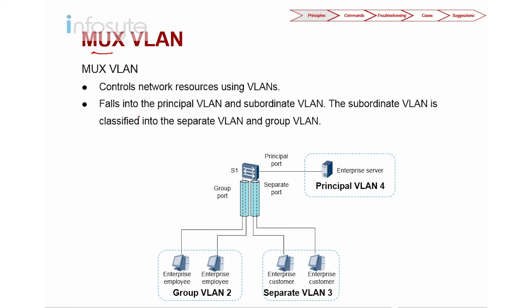The main purpose of the Multiplex VLAN is to control network resources using VLAN. Referring to this diagram, I have Switch S1 with 4 PCs in 2 different groups. VLAN 2 is for employees and VLAN 3 belongs to customers. These customers are not supposed to see each other — they cannot communicate among themselves, but they are allowed to communicate to the enterprise server.